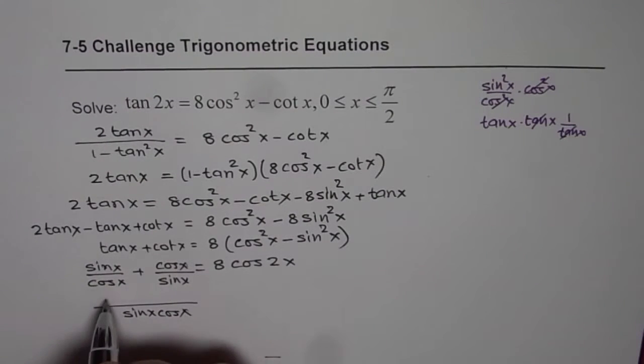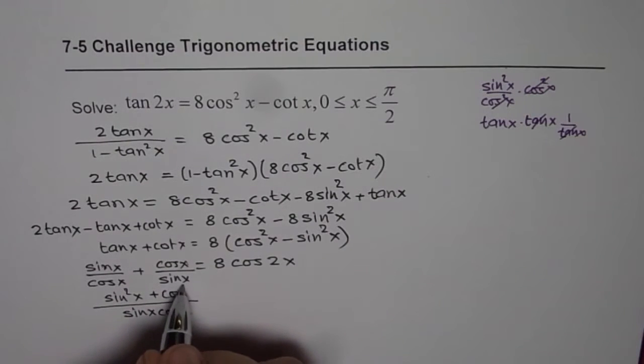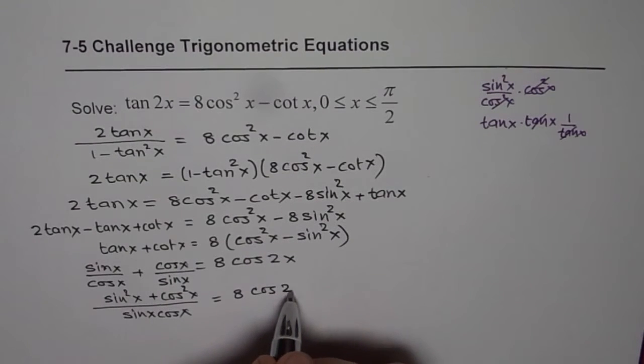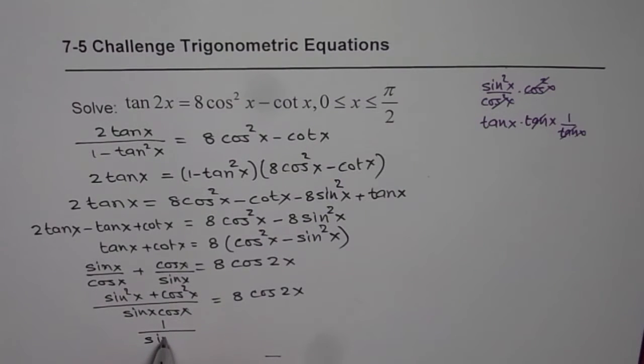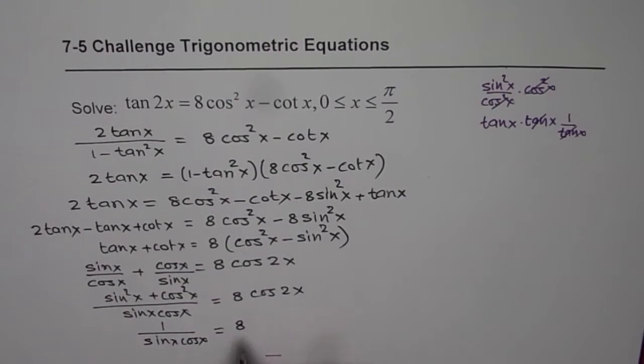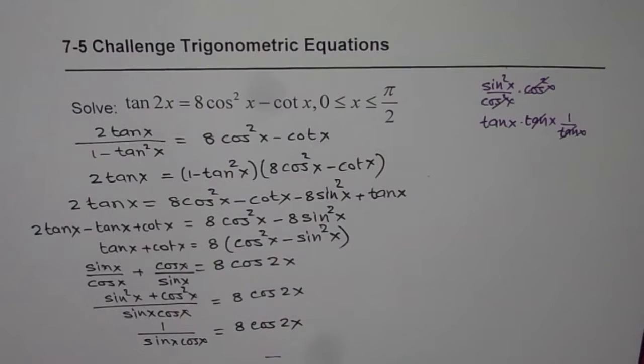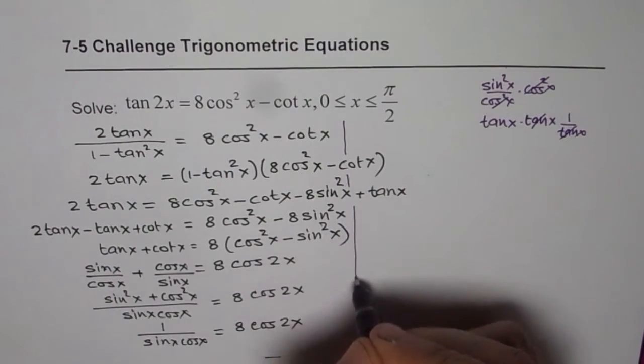Cross multiplying we get sine square x plus cos square x equals 8 times cos 2x. Now sine square x plus cos square x is 1, so you get 1 over sine x cos x equals 8 times cos 2x. Let me bring all these terms to the right side and solve further.